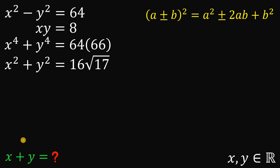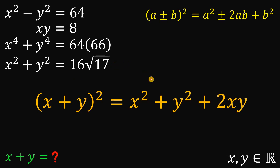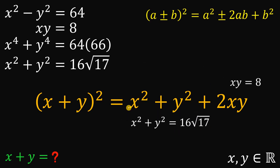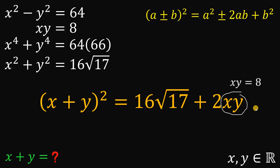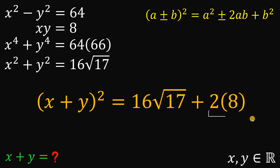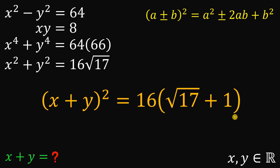Finally, we can find x plus y because x plus y raised to the power of 2 is just x squared plus 2xy plus y squared. Rearranging some terms, we now know the value of x squared plus y squared and the value of x times y. Let's replace x squared plus y squared with 16 times square root of 17, and xy with 8. So 2 times 8 is 16, and we find another common factor of 16 in these two terms, so let's factor out 16. We get 16 multiplied by square root of 17 plus 1. Now we want x plus y, so let's take the square root on both sides.